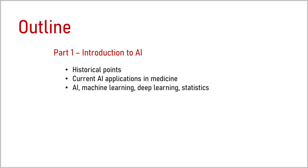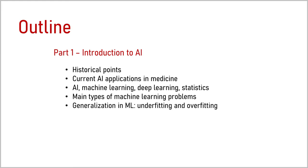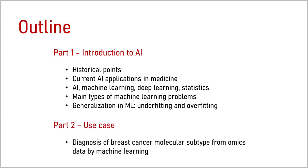Then we will consider the differences between artificial intelligence, machine learning, and deep learning, as well as statistical approaches that are also widely used in medical research. We will also discover the main types of machine learning problems and a classical problem of generalization in machine learning. In the second part, we will study a simplified use case to identify breast cancer molecular subtypes from omics data by machine learning.